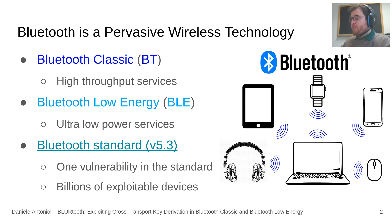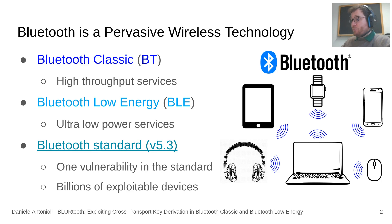BT and BLE are specified in the Bluetooth core specification, a 3,000-page document freely downloadable from the internet. This specification, also known as the Bluetooth standard, describes the security mechanisms that all BT and BLE devices have to implement, including pairing and session establishment protocols. Importantly, one vulnerability in any of these standard mechanisms can be exploited on the whole Bluetooth ecosystem of devices.